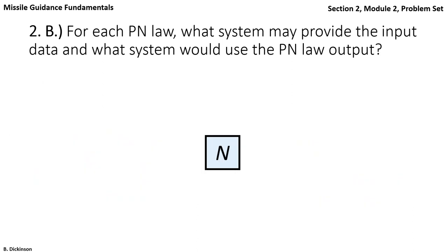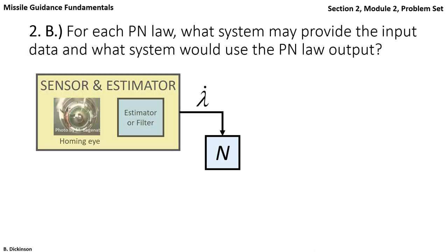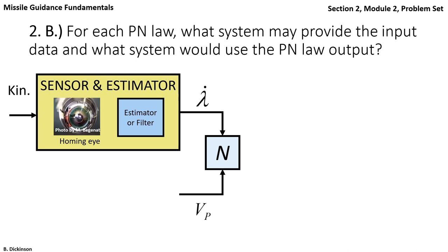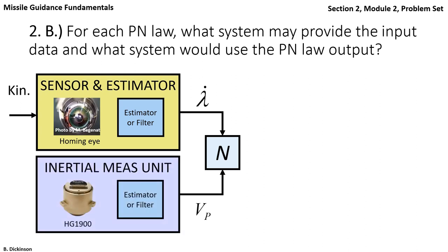If we have the acceleration form of pronav, then we're going to need another sensor in the loop. Here's the input for line of sight rate. To get VP, one option is an inertial measurement unit.